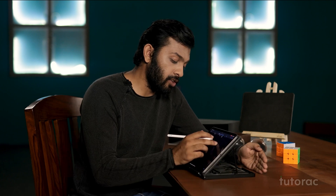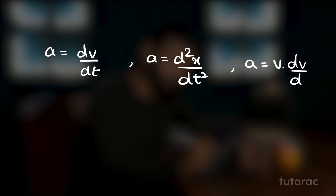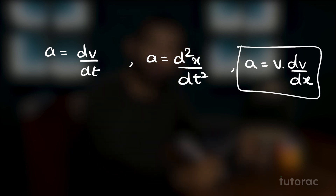Now let's move on to equation number 3. We have studied that acceleration can be written in several forms: instantaneous acceleration can be written as dv by dt, it can also be written as d²x by dt squared, and it can also be written as v·dv by dx. This last form will help us find the third equation of motion.